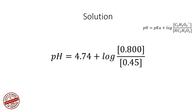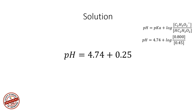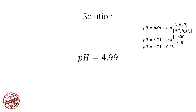Substituting the values, the equation becomes: pH = 4.74 + log(0.800 / 0.45). Solving log(0.800 / 0.45) gives 0.25, so the final pH of the solution is 4.99. That completes the first part of the problem — we have calculated the pH of the buffer solution.